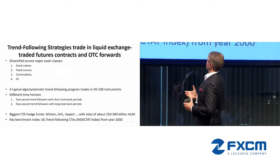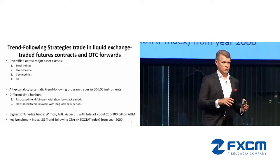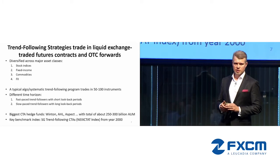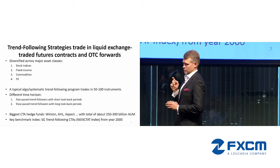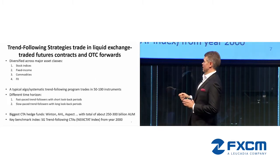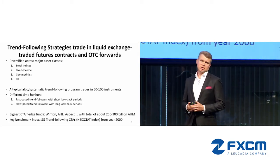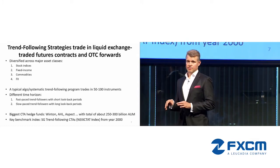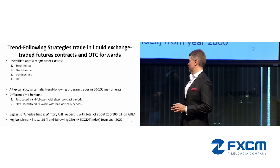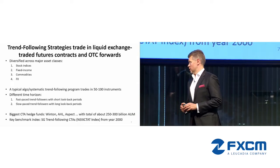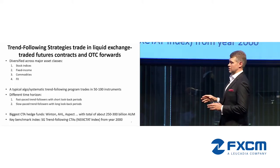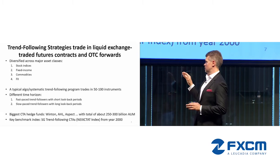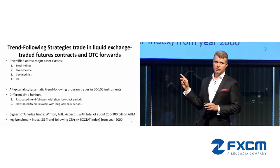Trend following strategies typically trade in liquid futures contracts or OTC forwards, and programs are diversified across major asset classes: stocks, stock indices, fixed income, commodities, and FX. A typical program will trade 50–100 instruments across different time horizons. Fast-paced trend followers have a shorter look-back window, while slow-paced ones have longer look-back periods. The biggest CTA hedge funds — Winton, HL Aspect — total in this space about 250–300 billion. The key benchmark I will use is the CG trend following CTA index.